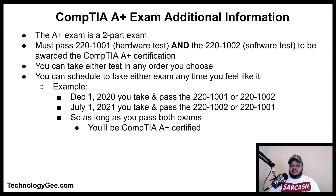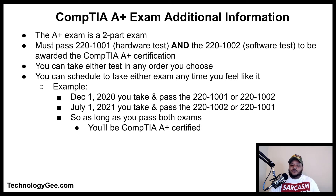The CompTIA A+ certification is a two-part exam. You must pass the 220-1001, also known as the hardware test, and the 220-1002, known as the software test, to be awarded the certification. You can take either test in any order — days, weeks, or months apart. For example, if you take the 220-1001 on December 1st, 2020 and the 220-1002 on July 1st, 2021, as long as you pass both, you will be awarded the CompTIA A+ certification, effective the day you pass the second exam.